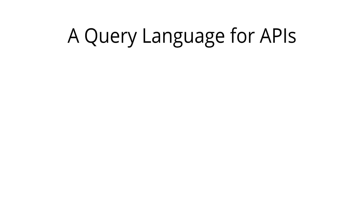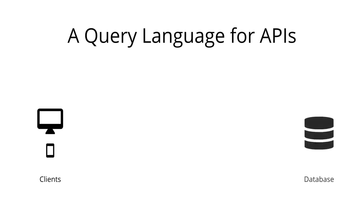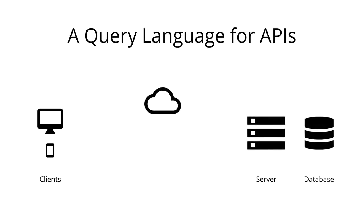So how does it all work? Most applications today have the need to fetch data that's stored remotely in some database that's accessible over the internet. That's what servers are used for. Whenever a client needs some information that it wants to display to the user, it sends a request to the server. The server is programmed to respond to the request by retrieving the appropriate information from the database and then sends it back to the client.